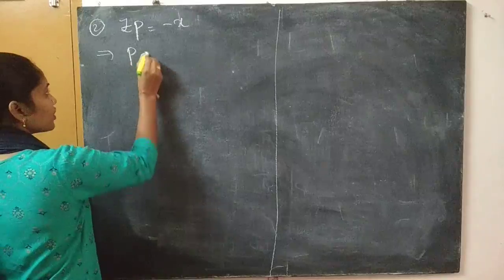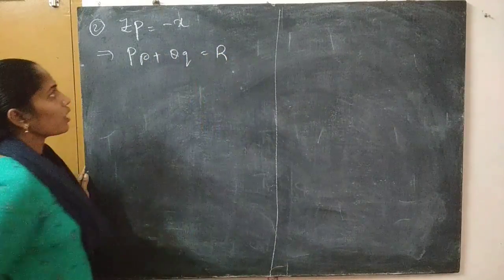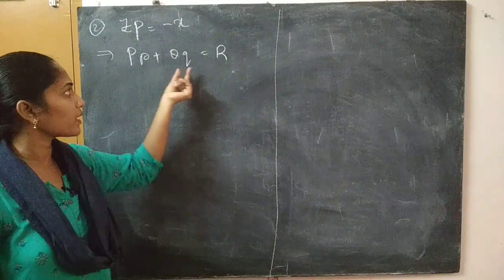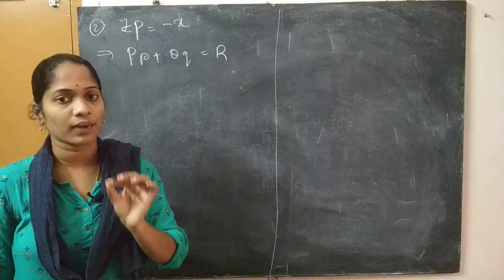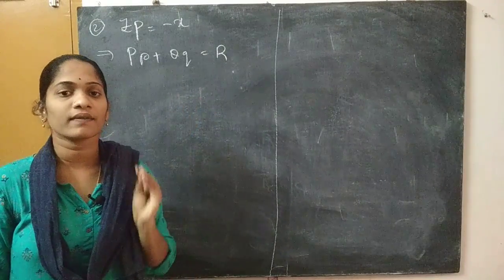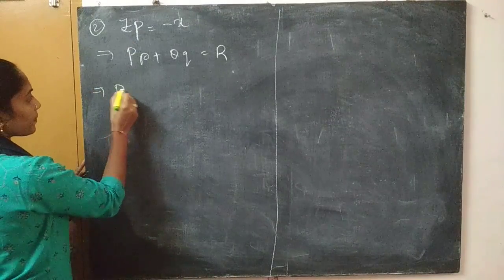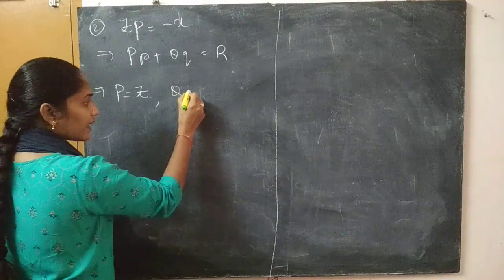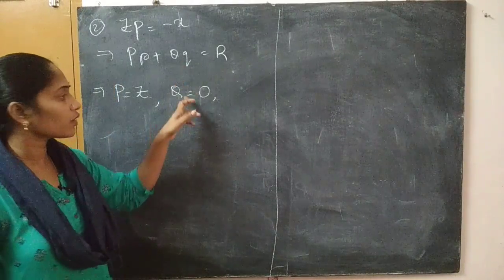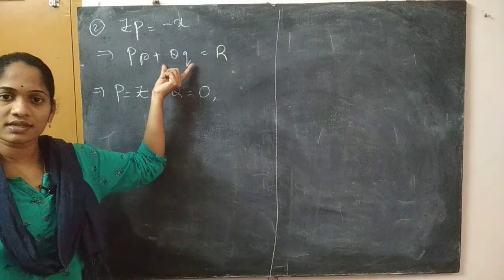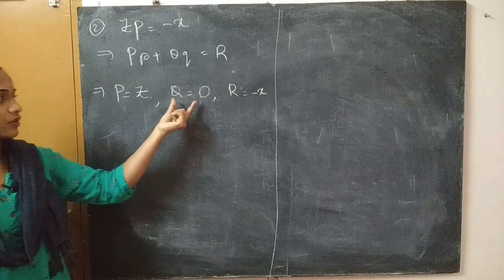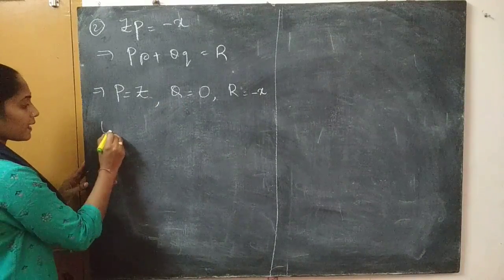Write it as P·p plus Q·q equals R. Compare to find capital P, Q, R — these are functions of x, y, z, not small p and q. Small p and small q are the partial derivatives with respect to x and y. So comparing: capital P equals z (coefficient of p), capital Q equals 0 (q is not present in the equation), and capital R equals minus x.